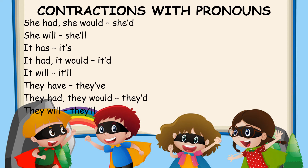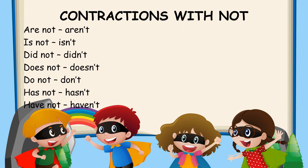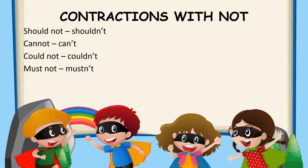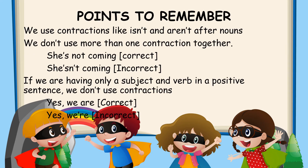Now let us look at the contractions with 'not.' Are not — we take the O and put an apostrophe, that is aren't. Is not — isn't. Did not — didn't. Does not — doesn't. Do not — don't. Has not — hasn't. Have not — haven't. Had not — hadn't. Was not — wasn't. Were not — weren't. Will not — won't. Would not — wouldn't. Shall not — shan't.